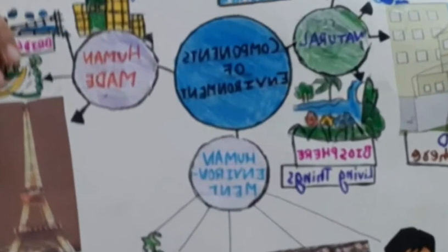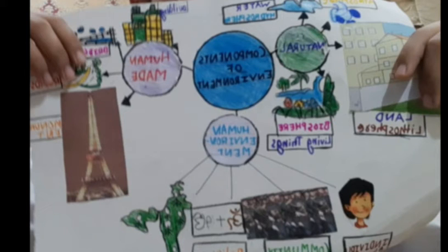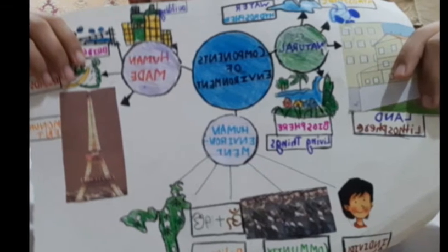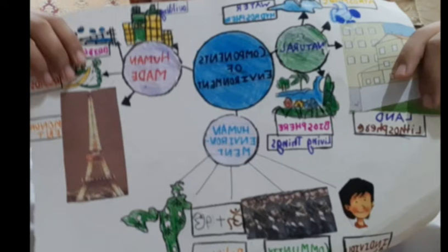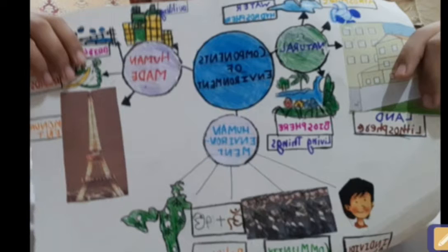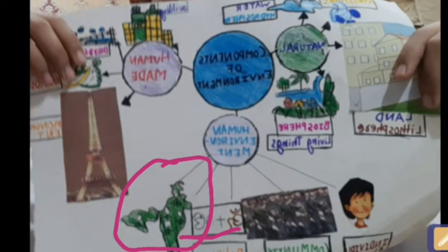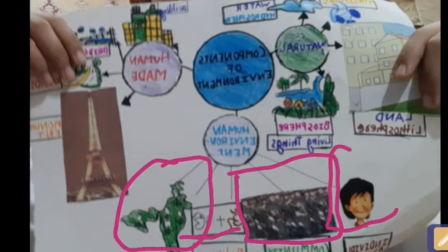Let's see the pictures. What are the components of human-made environment? Building, road, bridge, monument. And what are the components of natural environment? Land, biosphere, lithosphere, hydrosphere. What is the human environment? It includes religions, political systems like governments, communication, and the individual.